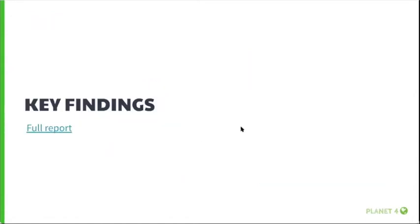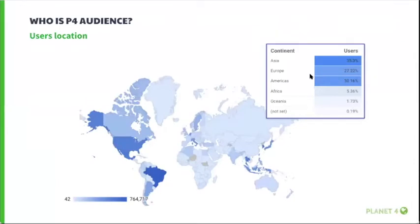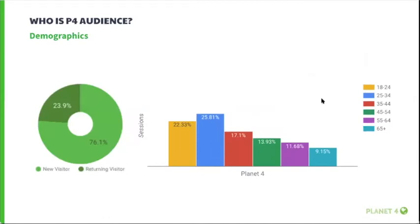We are here today to present the key findings and takeaways, so let's start with a quick overview of who P4 users are. We can see that global user locations match the websites receiving most P4 traffic — Asia, America, and Europe — but we are hardly reaching audiences in Africa and Oceania. Most P4 users are between 25 to 44 years old and are visiting P4 for the first time. Females are the largest group from the P4 global audience.